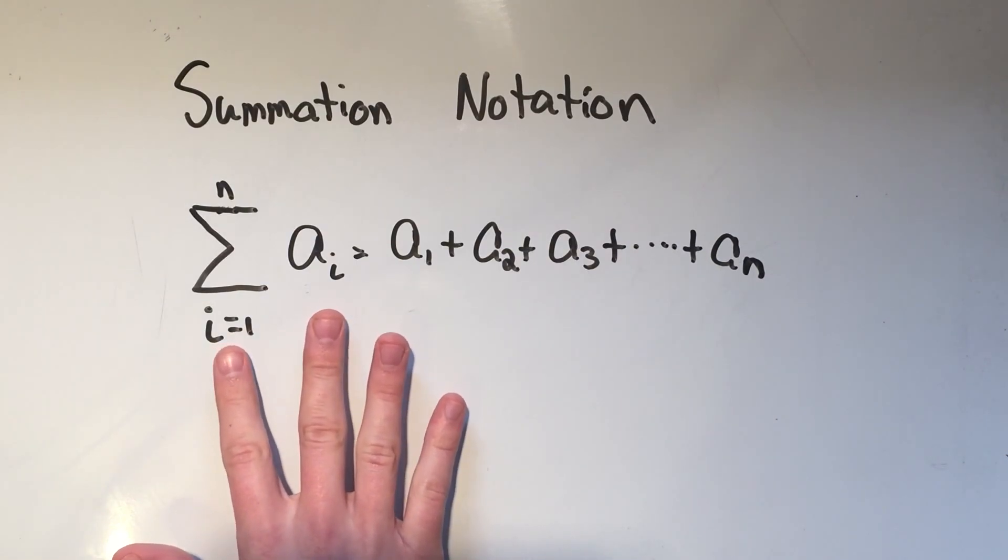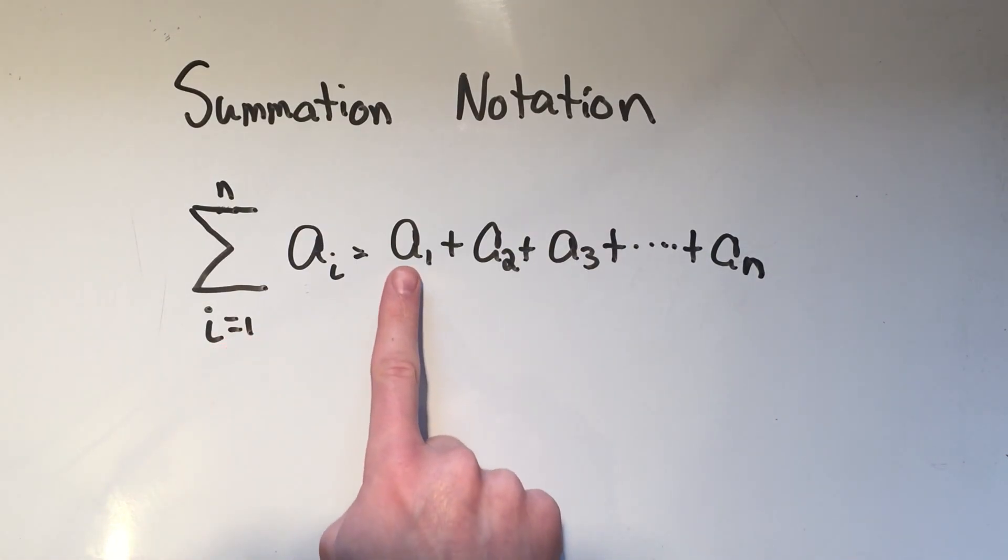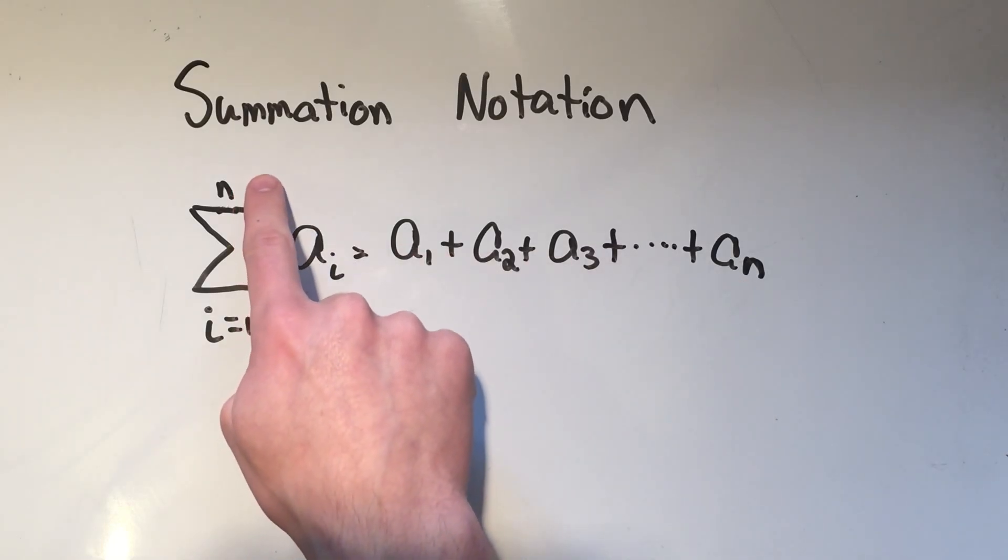What this thing represents would be a of 1 plus a of 2 plus a of 3, whatever these values happen to be, plus all the way up to n. So I go through all the integers from 1, 2, 3, 4, 5, up, however high n is.